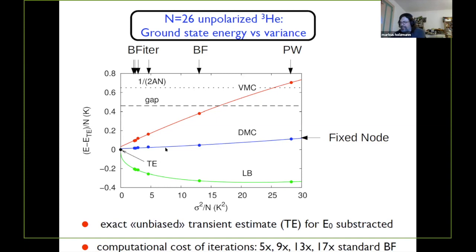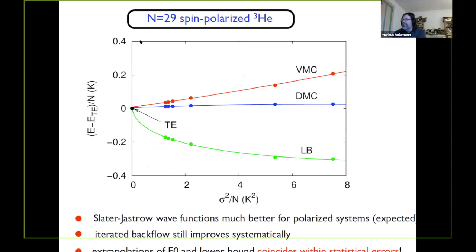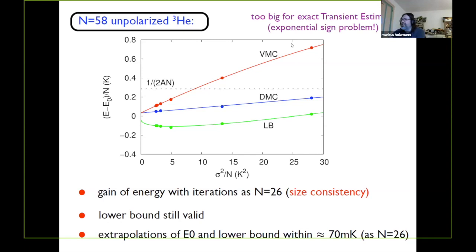An important issue is whether this wave function is size consistent. The derivation suggests backflow wave functions should be size consistent. Going to 58 atoms we see a similar gain in energies at the VMC and DMC level, though we no longer know the exact result from transient estimates — it's a factor of two in the exponent of the particle number.